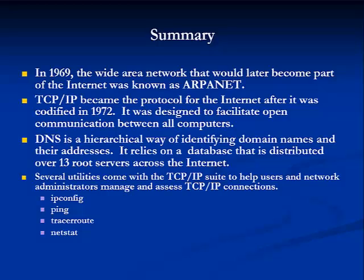In summary, we learned that in 1969 the wide area network that would later become part of the Internet was known as ARPANET, and TCP/IP became the protocol for the Internet after it was codified in 1972. DNS is a hierarchical way of identifying domain names and their addresses, relying on a database distributed over 13 root servers across the Internet. Several utilities come with the TCP/IP suite — including IP config, ping, traceroute, and NetStat — to help users and network administrators manage and access TCP/IP connections. This completes Module 12; please take Quiz 12, and I'll see you in Module 13.